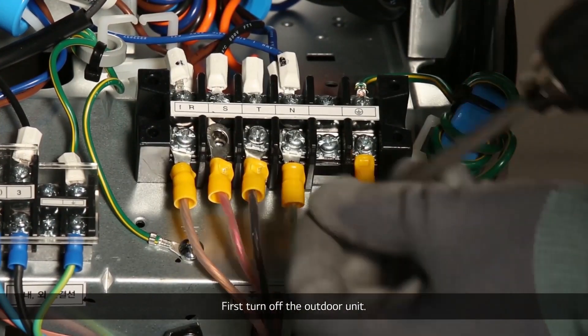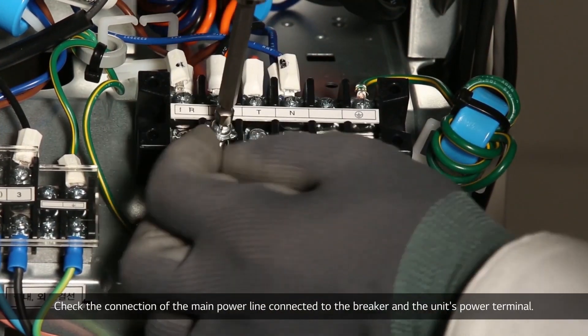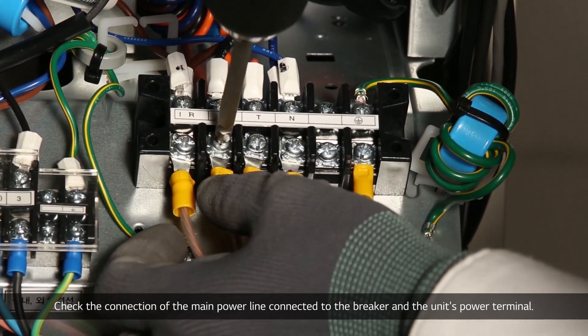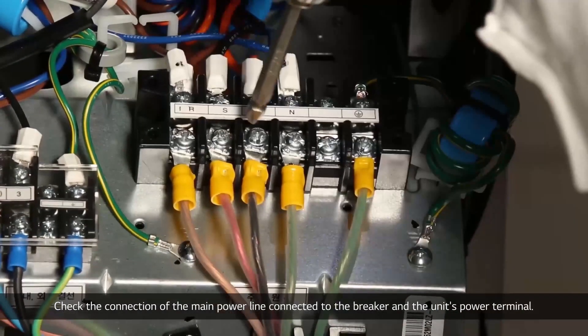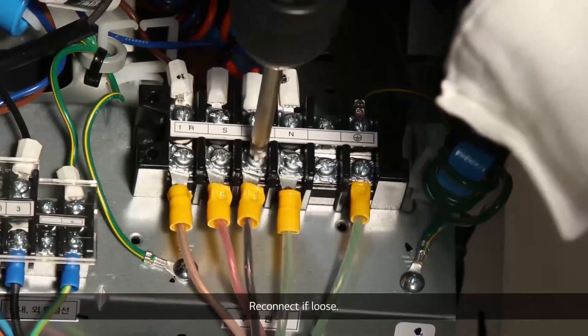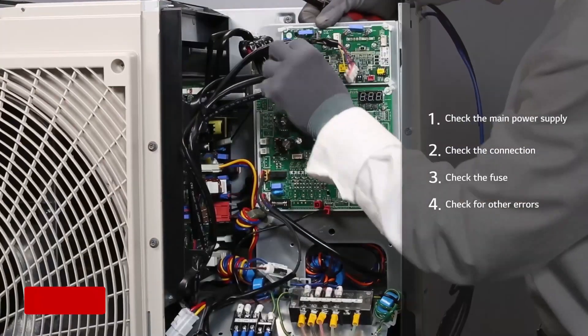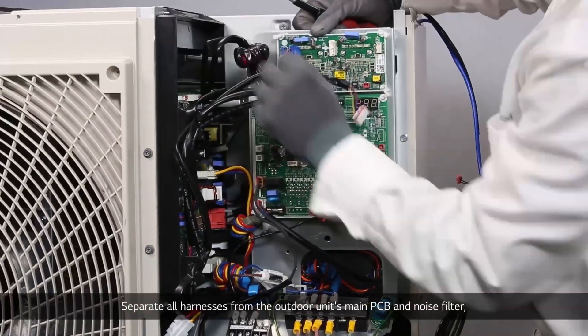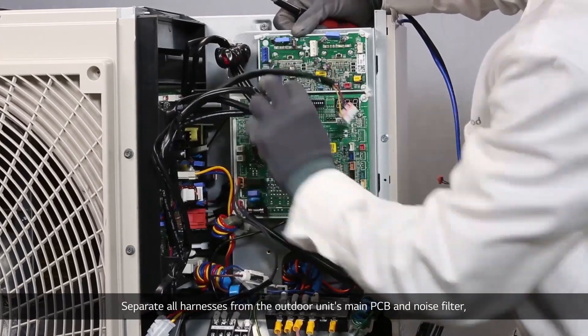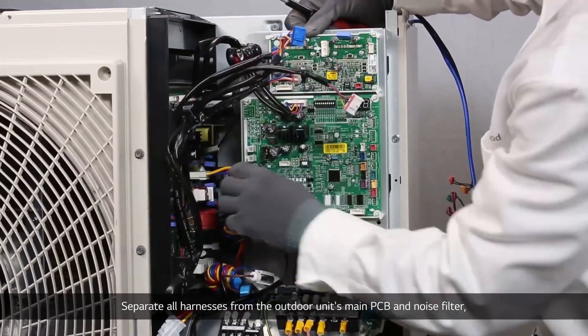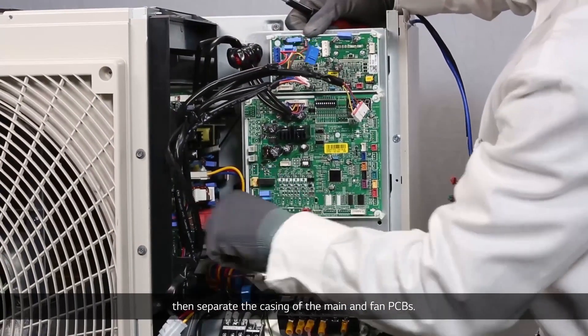First, turn off the outdoor unit. Check the connection of the main power line connected to the breaker and the unit's power terminal, reconnect if loose. Separate all harnesses from the outdoor unit's main PCB and noise filter, then separate the casing of the main and fan PCBs.